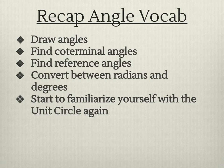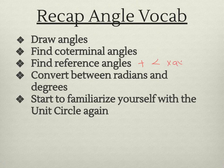So to recap, you should be able to draw positive negative angles even bigger than 360. Find coterminal angles, reference angles, always positive, always acute, and then always to the x-axis. Convert between radians and degrees, and just start to familiarize yourself with the unit circle again. Nice job.